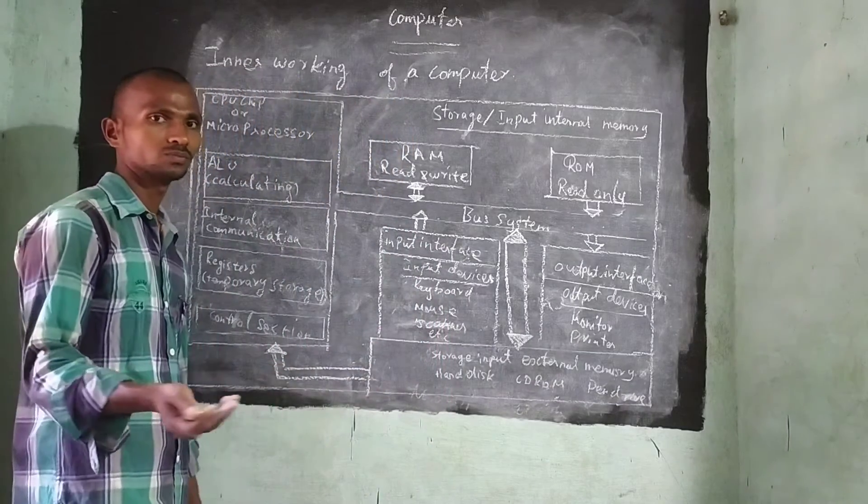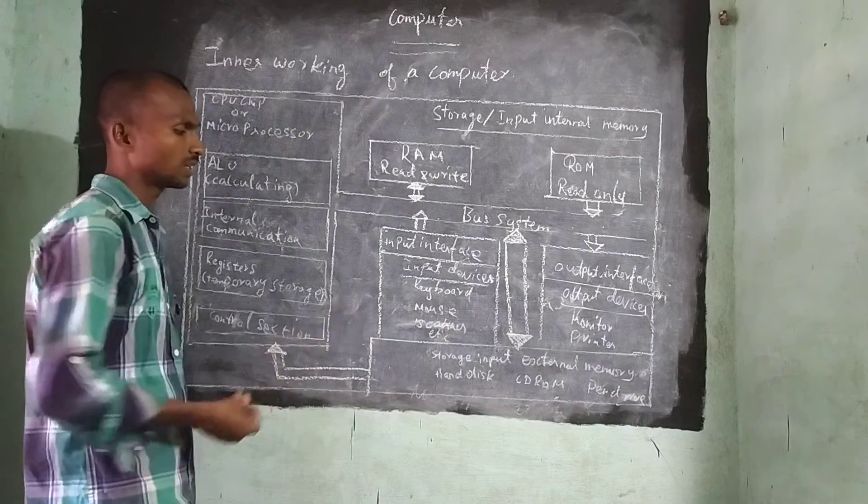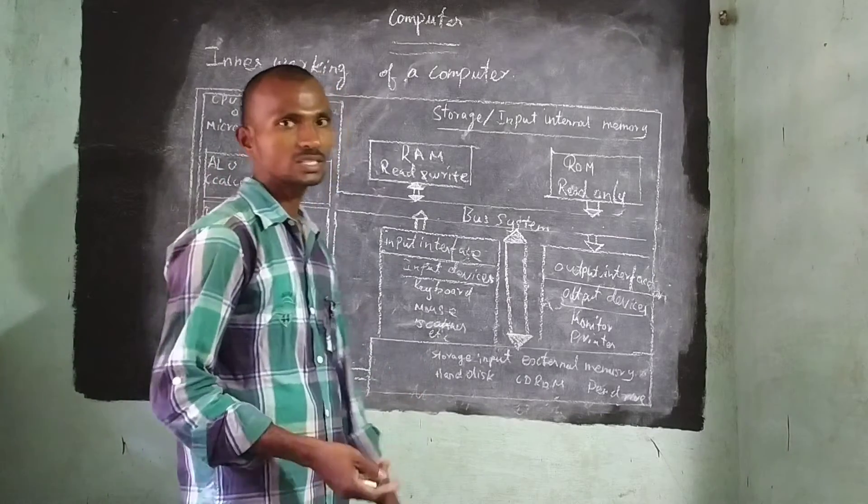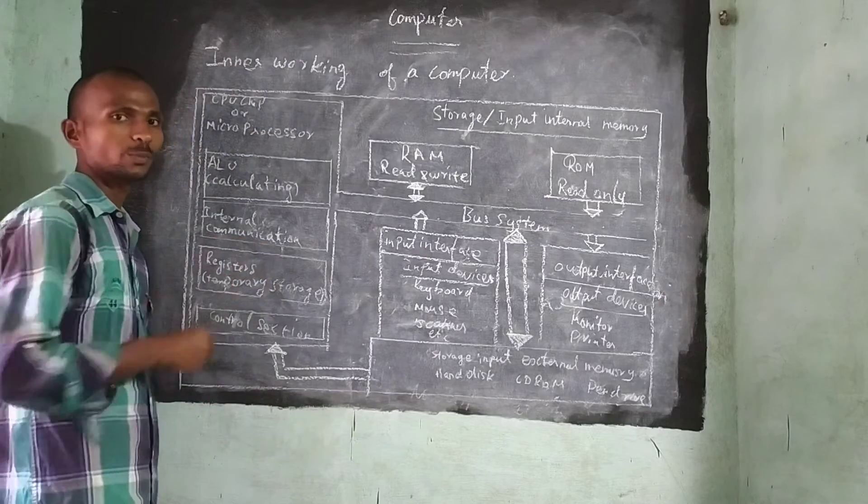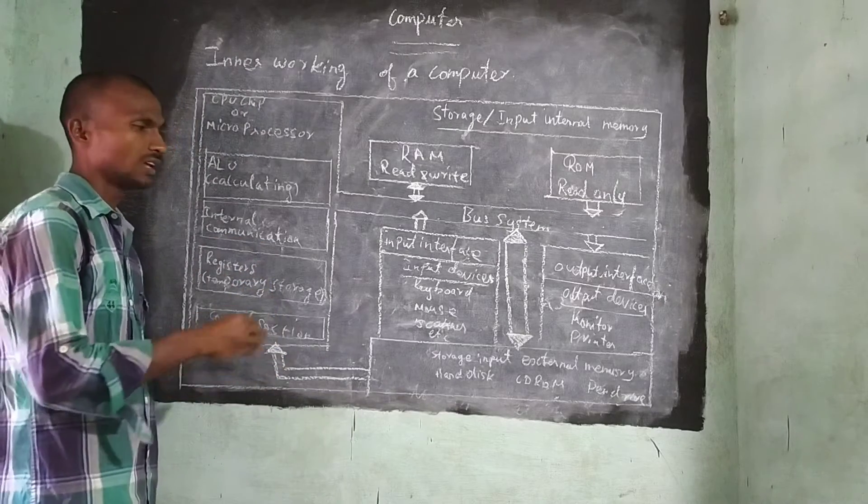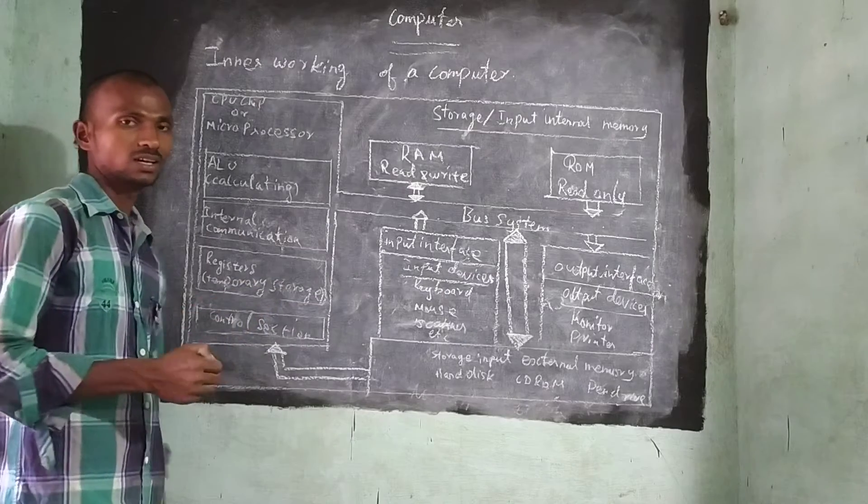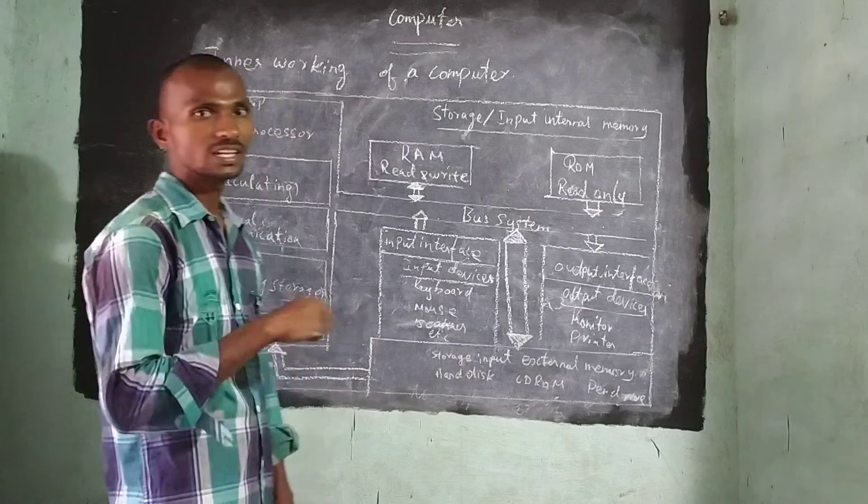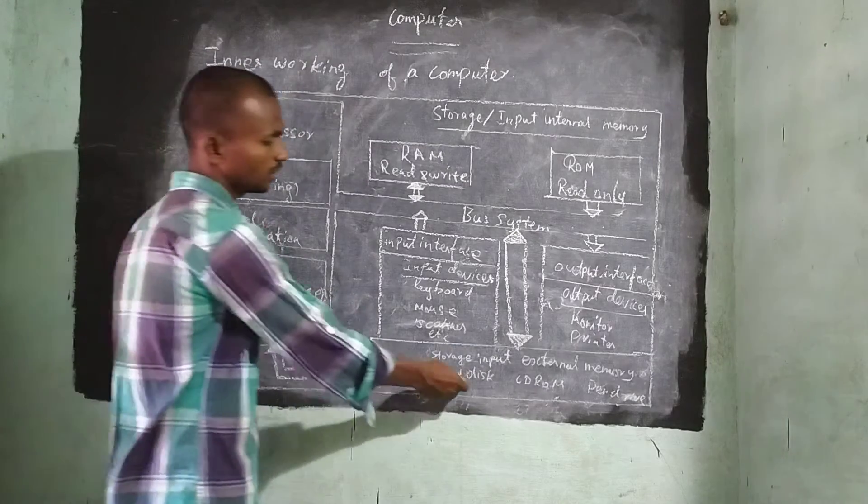And memory card. So these all come under the external memory. So hard disk. You can say, hard disk inside the computer only. How it comes under the external storage device? You can ask like this. But though it is connected inside the computer, we can remove it easily.